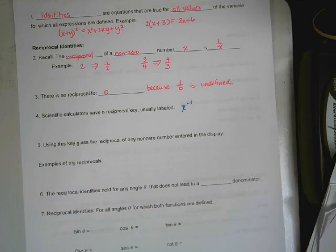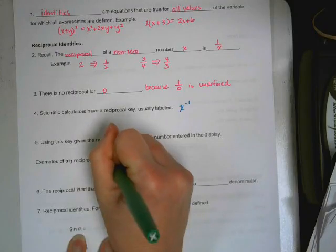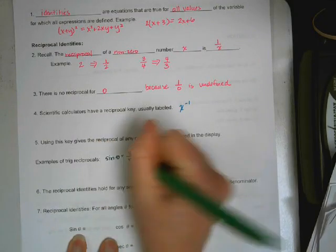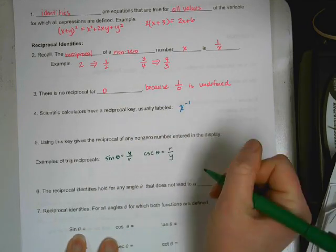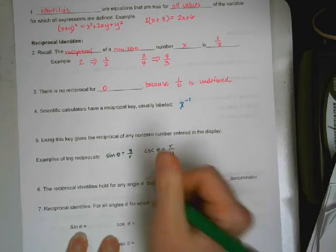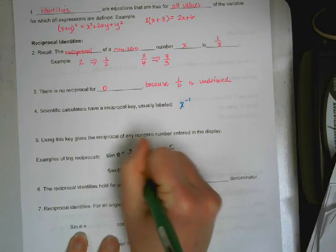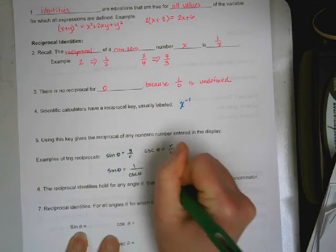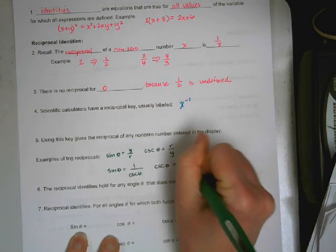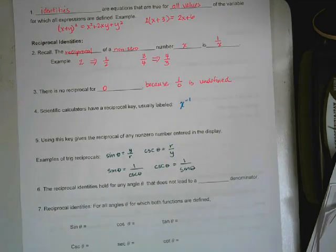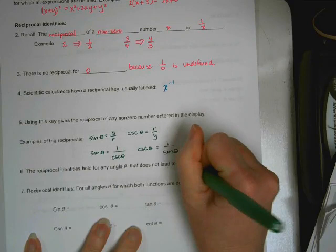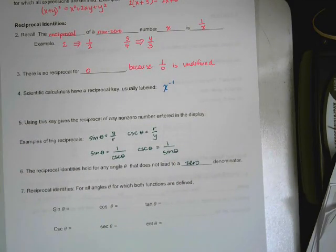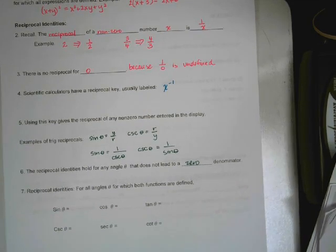Examples of trig reciprocals. We talked about this a little bit the other day when we were introducing the trig ratios. For example, sine of theta is y over r. Cosecant of theta is r over y. So these are reciprocal identities of each other. With that in mind, sine of theta is the same thing as 1 over cosecant theta, and cosecant theta is the same thing as 1 over sine theta. Reciprocal identities hold for any angle theta that does not lead to a 0 denominator.